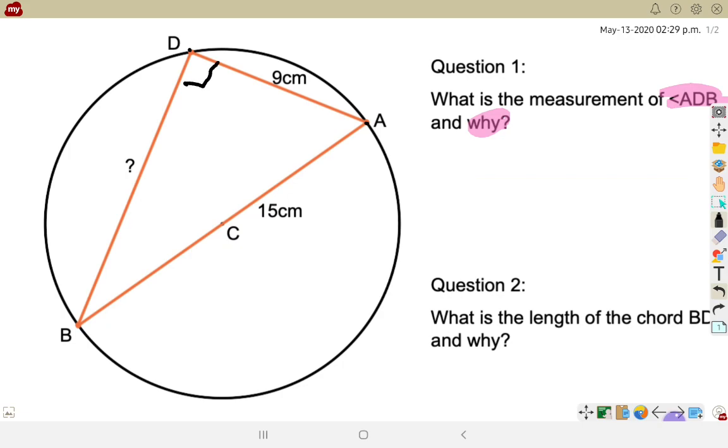We're going to put in a 90 degree angle here. Why? Well, it's because angle A to D to B is inscribed off of the diameter.